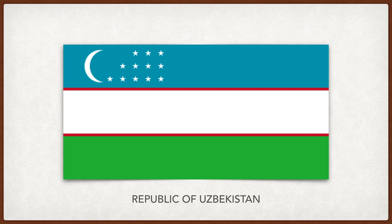Uzbekistan. White is for peace and purity, blue is for water and the sky, green is for nature and fertility, and the thin red stripes are the life force within everyone. The crescent represents Uzbekistan as an independent country and symbolizes Islam. The 12 stars represent the 12 months of the Islamic calendar and the 12 constellations of the zodiac.